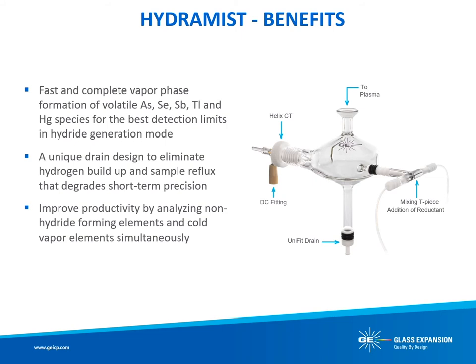The design of the Hydromist spray chamber is based upon Glass Expansion's industry-standard cyclonic spray chamber, giving excellent sensitivity and short-term analytical precision with fast washout. The Hydromist features a secondary inlet port that mixes the aerosolized sample and liquid reductant inside the spray chamber for rapid conversion of arsenic, selenium, antimony, thallium, and mercury analytes into volatile hydride species. The unique drain design ensures fast, complete removal of waste from the spray chamber, eliminating excess hydrogen buildup that causes sample reflux and degrades analytical precision.